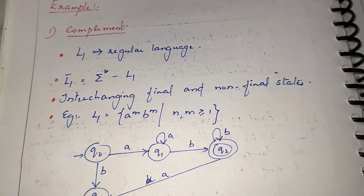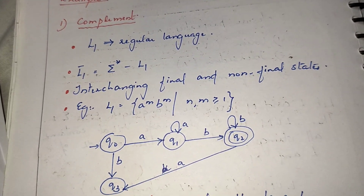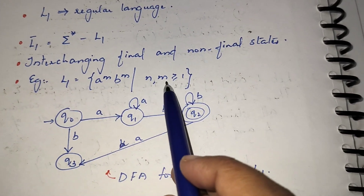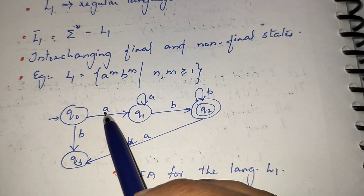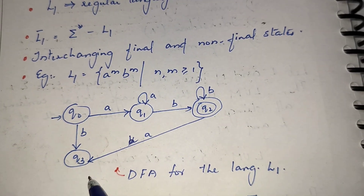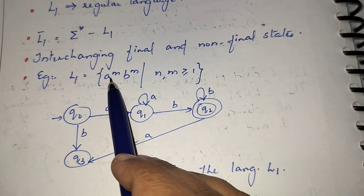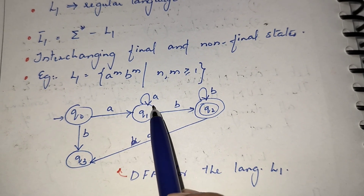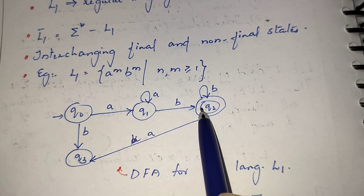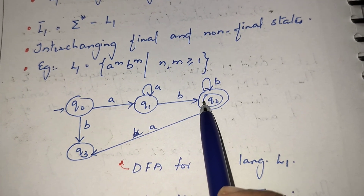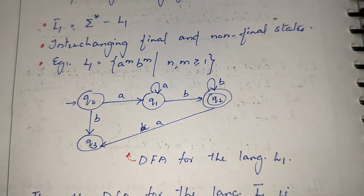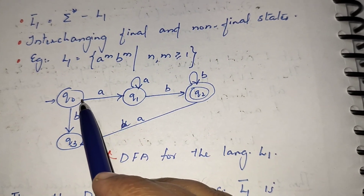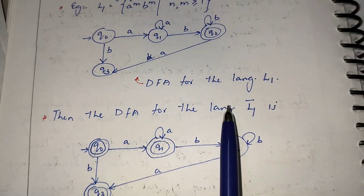For example, take a regular language L1 equal to a raised to n followed by b raised to m, such that n and m are greater than or equal to 1. I will draw a finite automaton — a DFA — for this particular language: any number of A's followed by any number of B's.